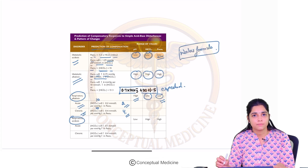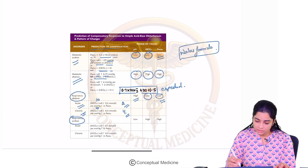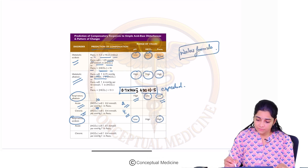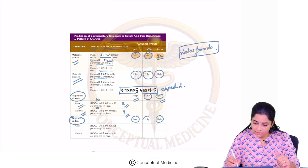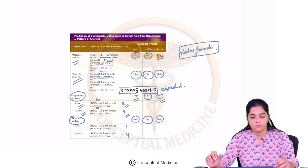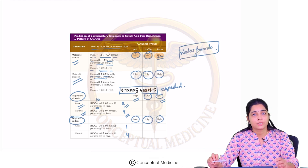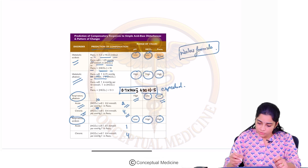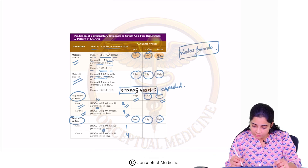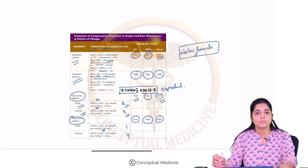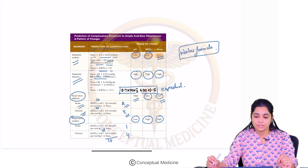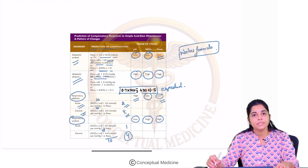In respiratory acidosis, the pH is low and PCO2 is high. The kidneys compensate by accumulating bicarbonate, so bicarbonate levels also increase. Remember the numbers 1 and 4: for every 10 mmHg increase in PaCO2, the bicarbonate will increase by 1 in acute, and by 4 in chronic respiratory acidosis.